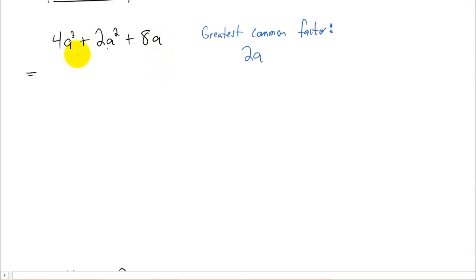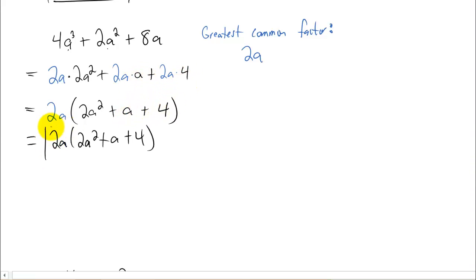Okay, so let's rewrite this expression by taking a 2a out of each one of these three terms. You'll notice that you can write 4a cubed as 2a times 2a squared. You can write 2a squared as 2a times a. And you can write 8a as 2a times 4. What are you left with? Well, you pull a 2a out of each one of these three terms. You pull them outside of the parenthesis. And you're left with 2a squared plus a plus 4. And that's it. That's your answer.